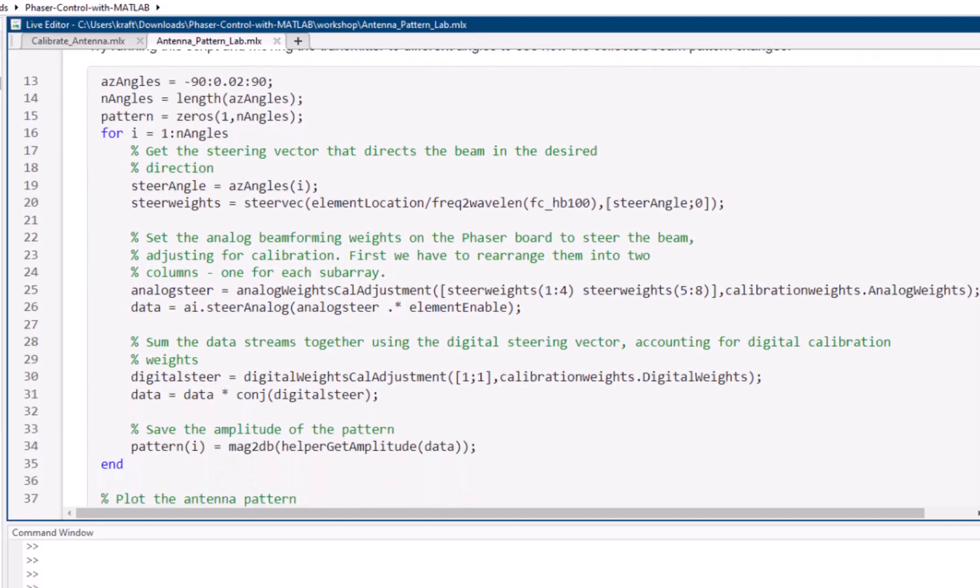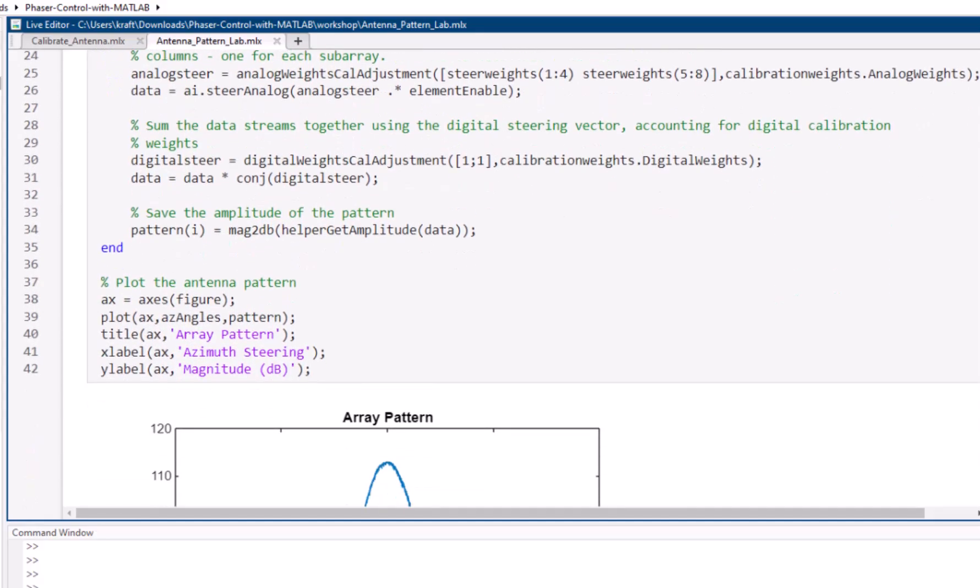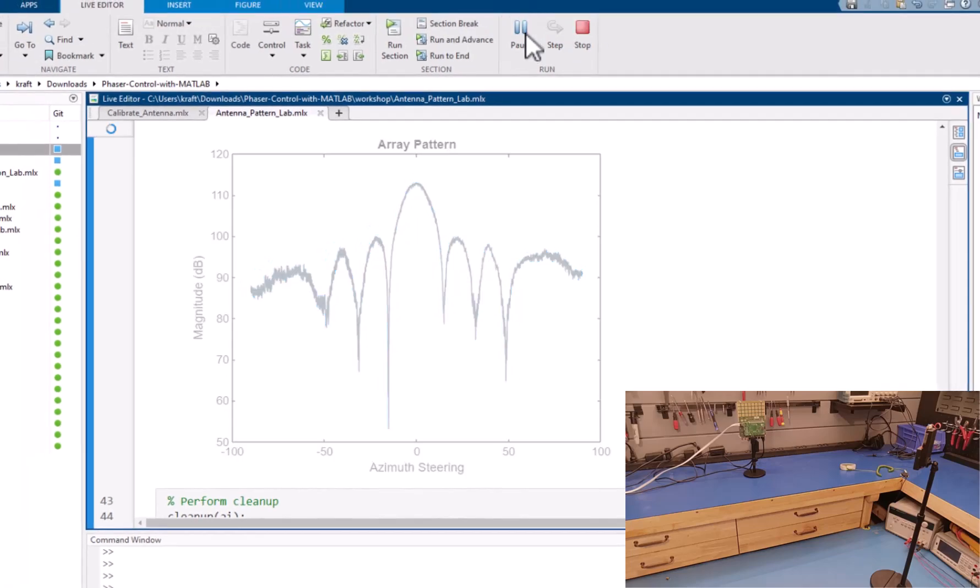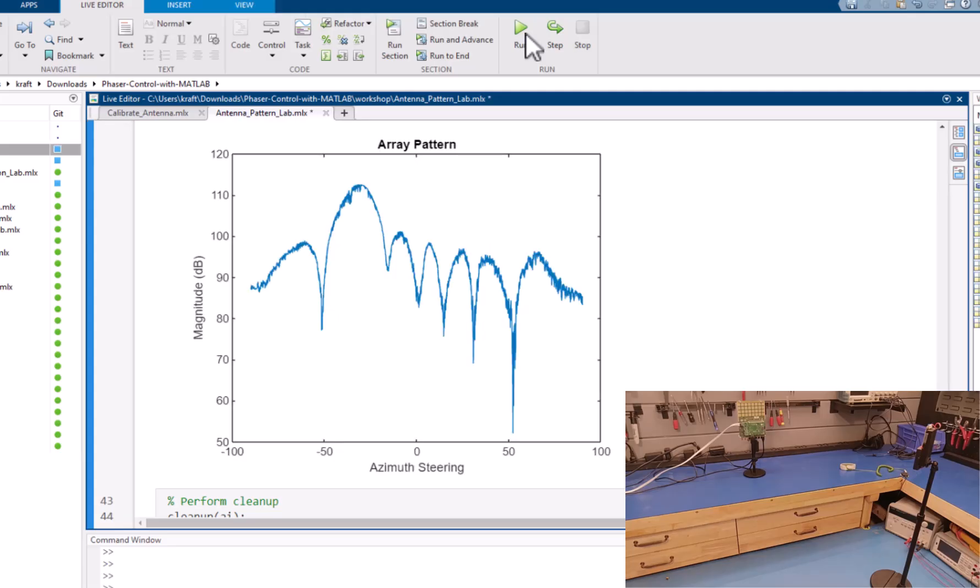Then we collect data from that phaser board. We're sweeping the steering angle from minus 90 degrees to plus 90 degrees, and then just plotting the power level for each of those steering angles. And here's what that pattern looks like for our array at mechanical boresight, which you can see that it is. But I'll rerun it here, moving the array over to about minus 30 degrees. So I'll hit run again, and that'll update all the plots. And you can see now that our peak power is at minus 30 degrees, and also see that wider half-power beam width that we just talked about.